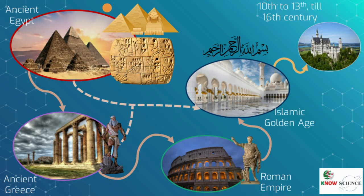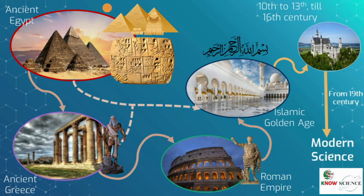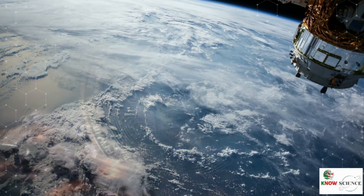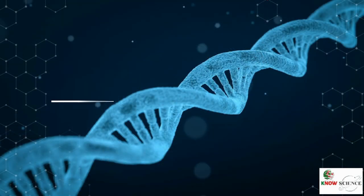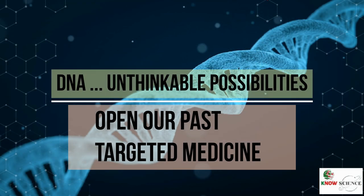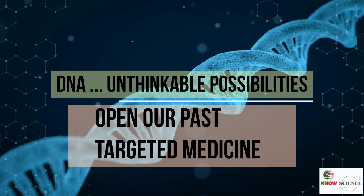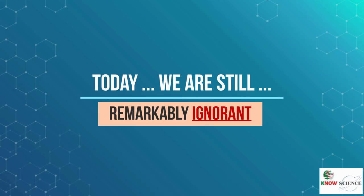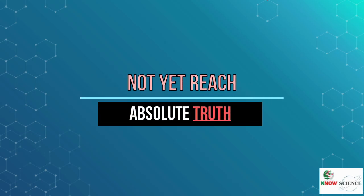Western Europe transferred and assimilated Greek works and Islamic inquiries from the 10th to 13th century and revived natural philosophy, which was later transformed by the Scientific Revolution that began in the 16th century. The scientific method soon played a more important role in knowledge production, and since the 19th century many institutional and professional features of science began to take shape. Our world is now full of technologies that once belonged to science fiction. Even DNA and its applications have opened unthinkable possibilities for understanding our past and applying targeted treatments. However, as scientists may not like to concede, we are still remarkably ignorant, as we do not think we have reached the absolute truth.